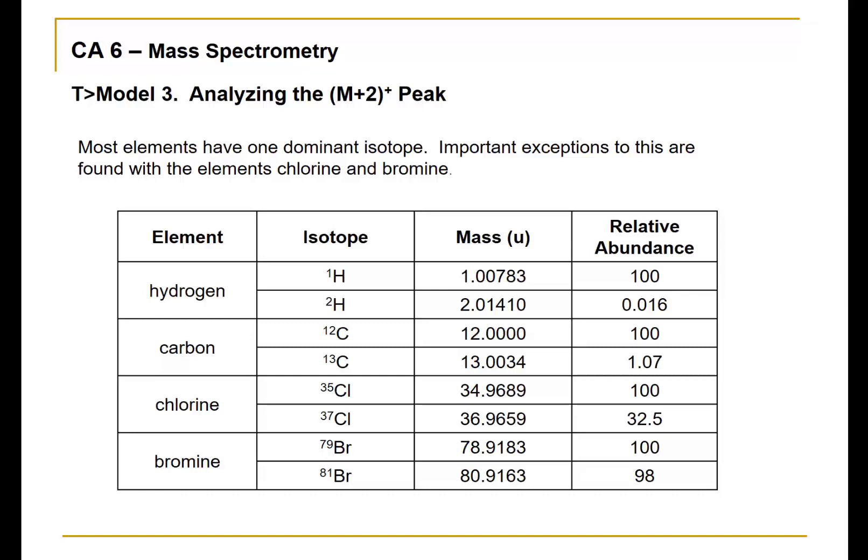One of the messages in this table is that most elements have one dominant isotope. For hydrogen, the dominant isotope is H1. For carbon, the dominant isotope is carbon-12.